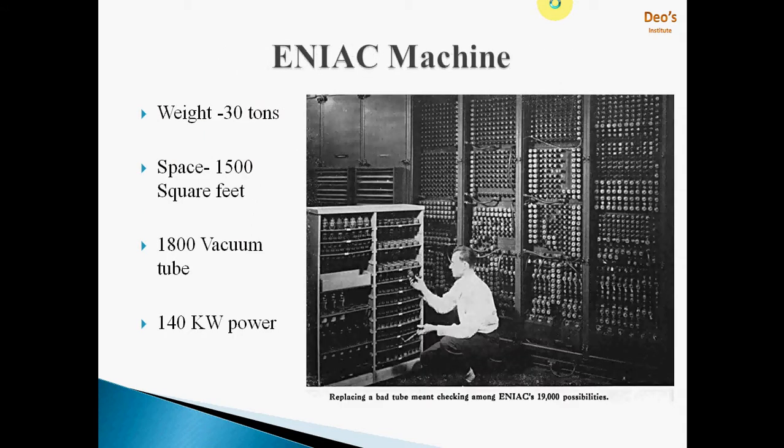Here we can see a picture of the ENIAC machine. It was very huge — the weight was around 30 tons and space required was around 1,500 square feet. It consisted of vacuum tubes — around 18,000 vacuum tubes — and required 140 kilowatts of power. In short, it was a very huge machine requiring very high power as well as space.